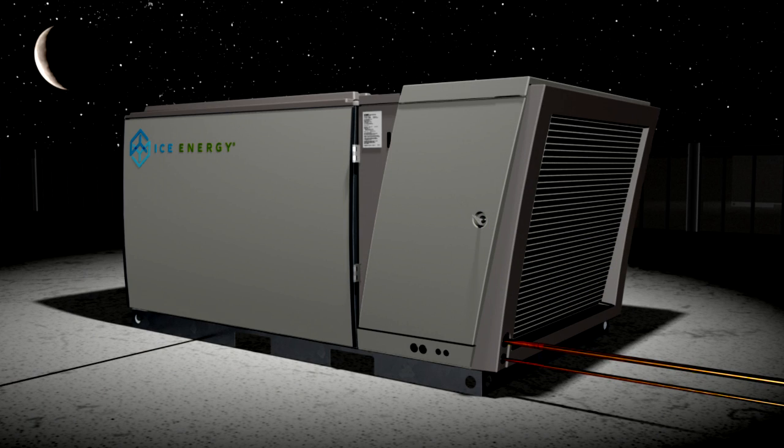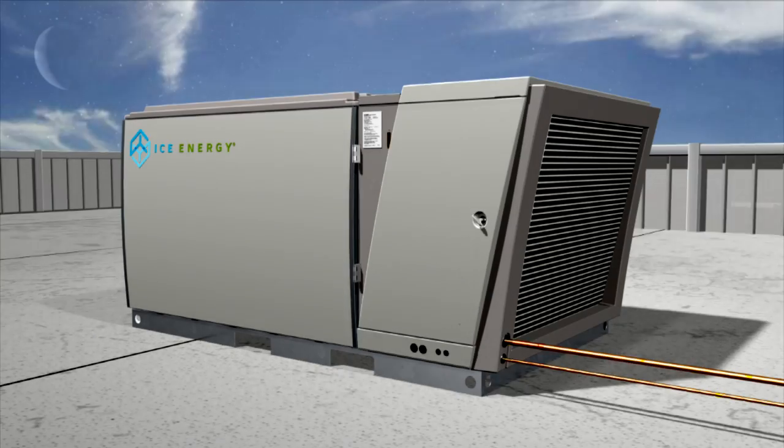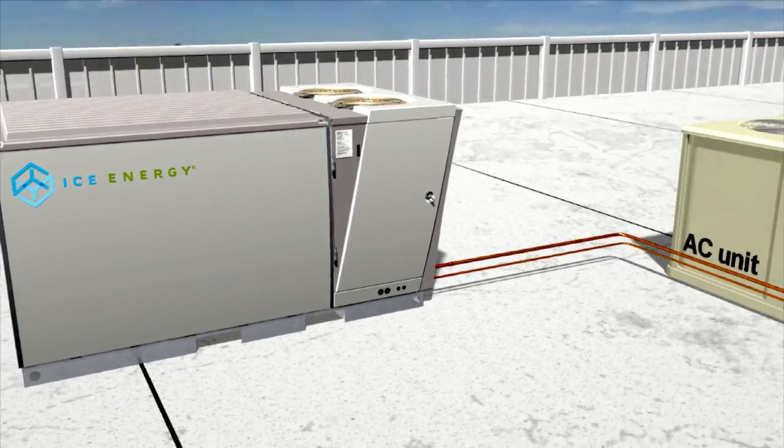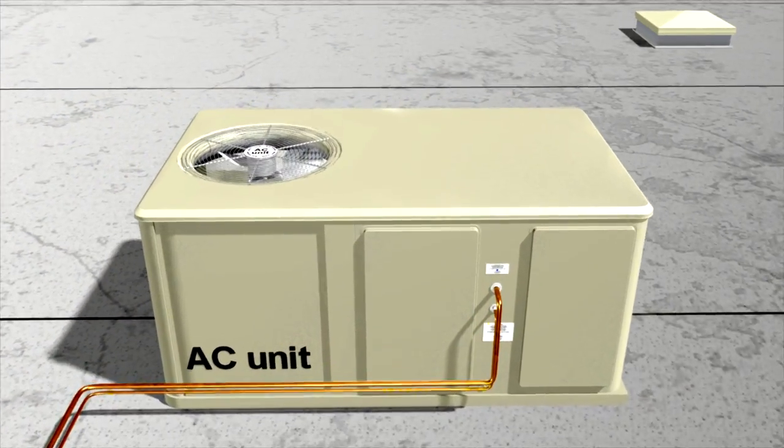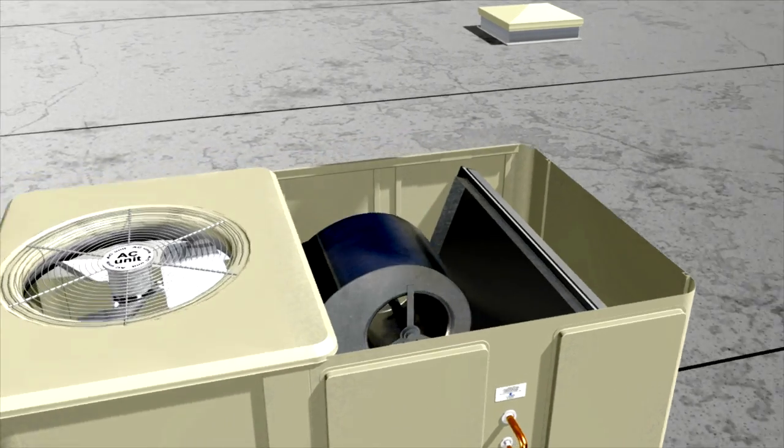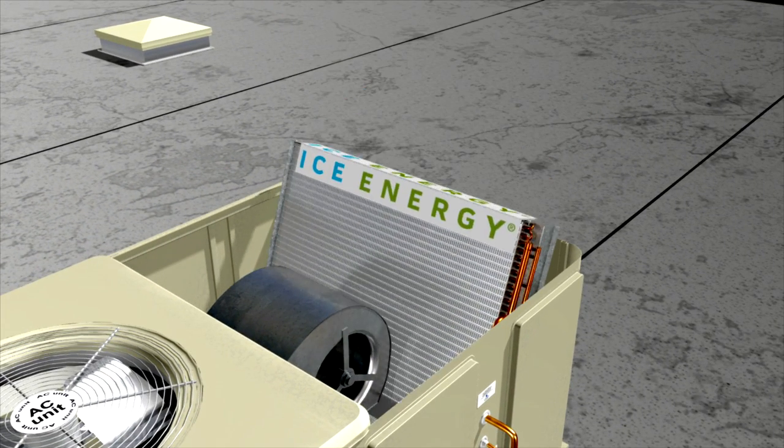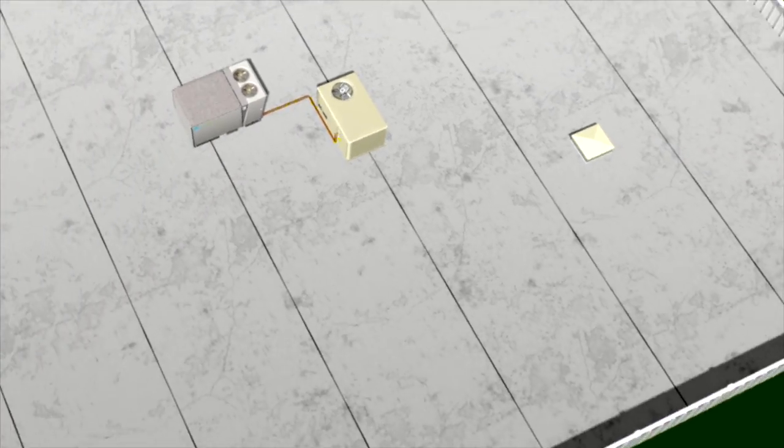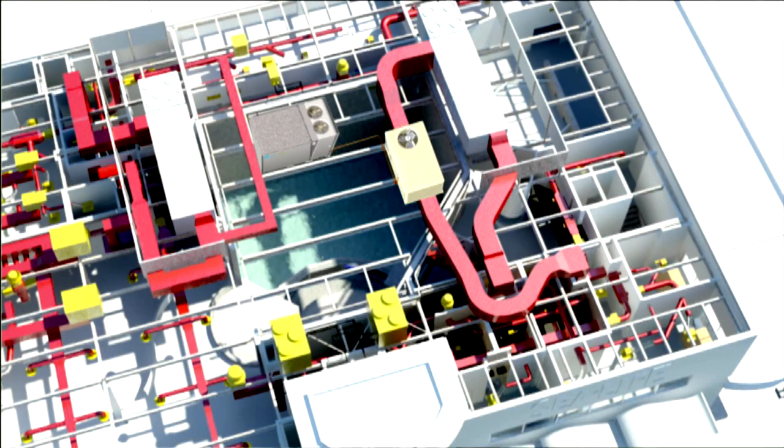Operation is simple and automatic. The IceBear stores energy at night and delivers that energy during the peak of the day. The IceBear integrates into the existing air conditioner by adding a new ice evaporator coil to the unit. No other changes are needed as the IceBear uses the existing air flow of the building's HVAC system.